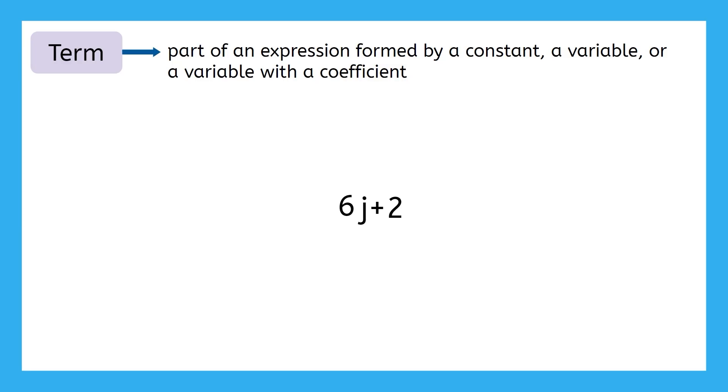Remember how we said the multiplication between 6 and J acts like a glue? Well, if we had division, like J divided by 6, or J over 6 as we usually say, then the division would also work as glue holding J and 6 together as a term. So, while multiplication and division glue parts together to create a term, addition and subtraction separate terms. In this case, the addition separates our algebraic expression into two distinct terms.